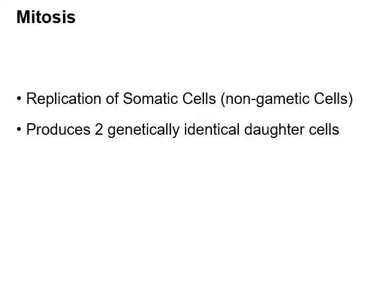Mitosis replicates somatic cells — any cells that are not gametic. Gametic refers to gametes: eggs and sperm, the cells our bodies produce during sexual reproduction. Everything that isn't eggs or sperm are somatic cells. So mitosis does the work of replicating all the cells in your body that aren't eggs and sperm.